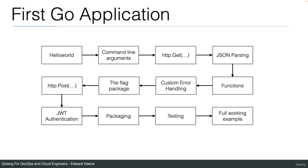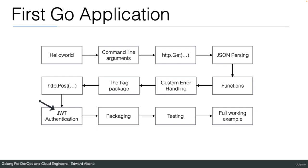In this section we are going to write our first Go application. We'll end up with a full working example. We're going to start from a simple hello world and build up until we have this full working example. I'm first going to cover command line arguments, then we're going to make API calls. We're going to do JSON parsing, explain functions and custom error handling, cover the flag package, do a POST request, explain JWT authentication, and then package and test our code. That will be our first Go application.